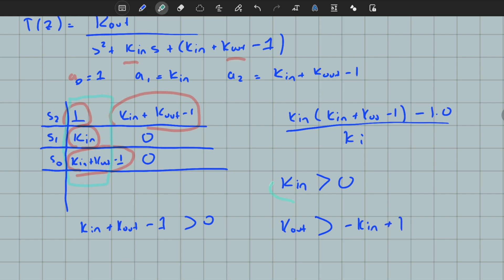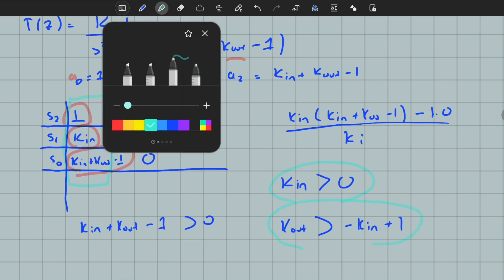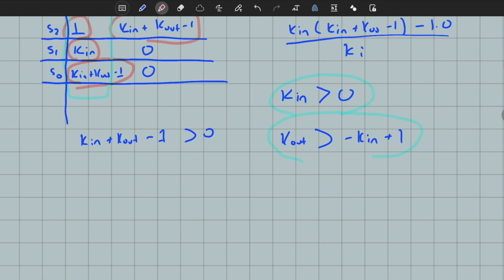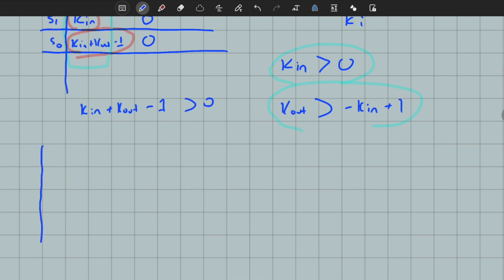These two conditions cover the range of stability for the closed-loop system. Let's draw this on an x-y plane to better understand the range of stability. First of all, we know that k_in should be greater than 0. This is k_in, this is k_out, so we're limited to this region. No negative k_in is allowed for stability.